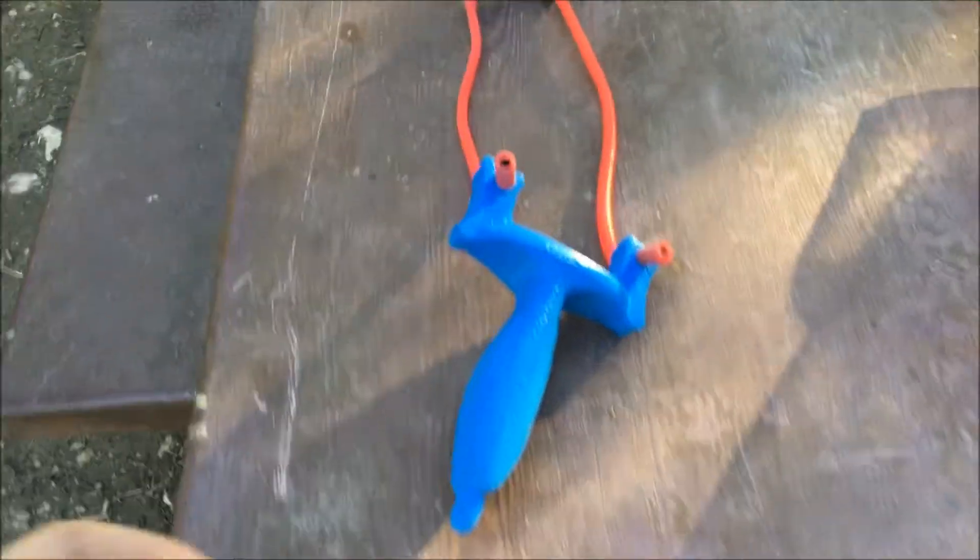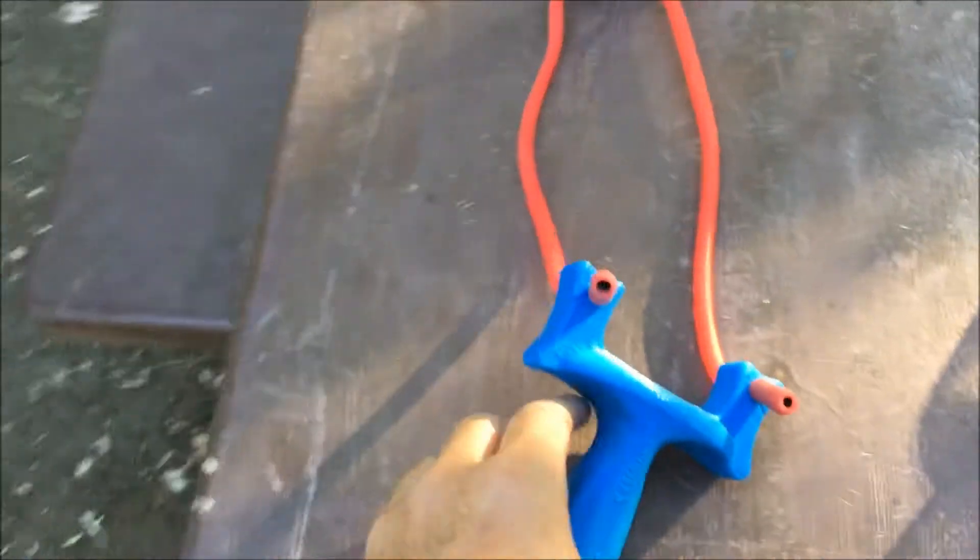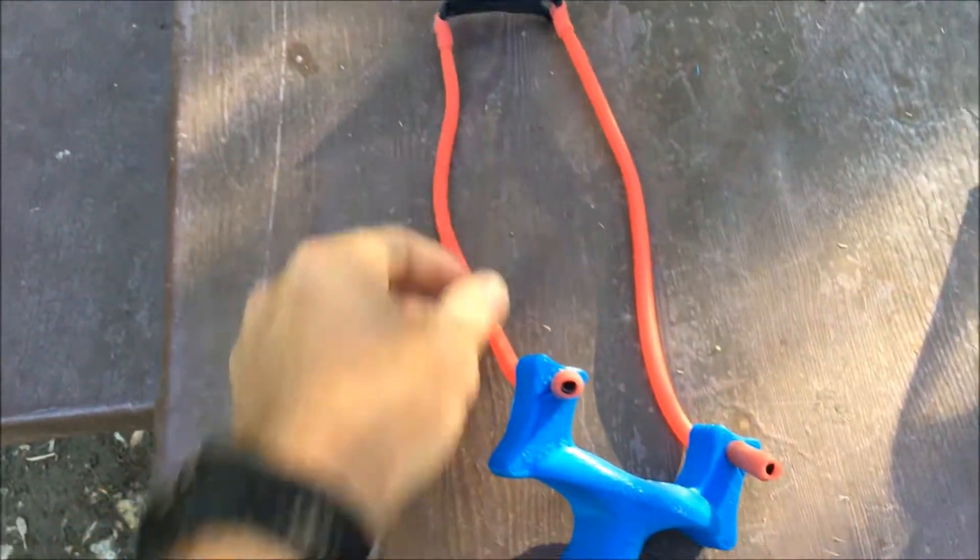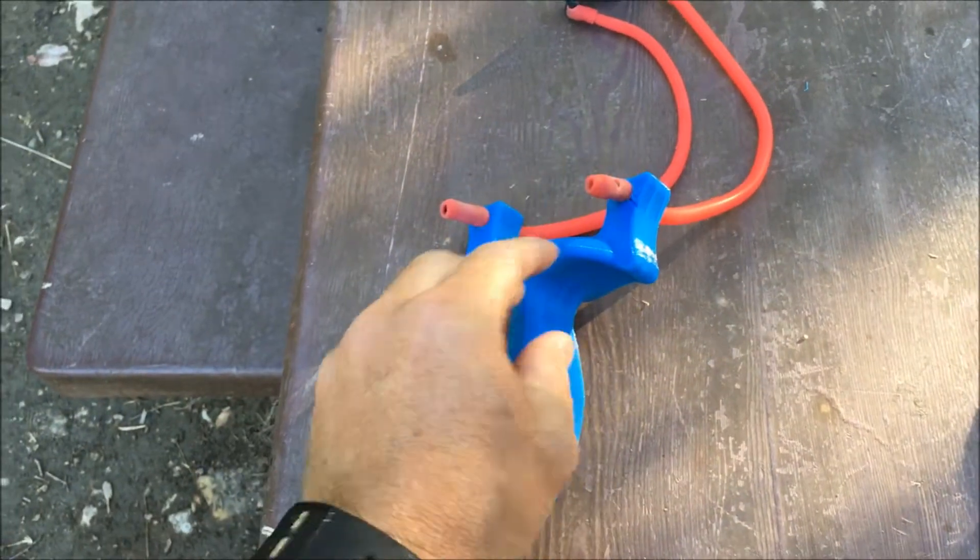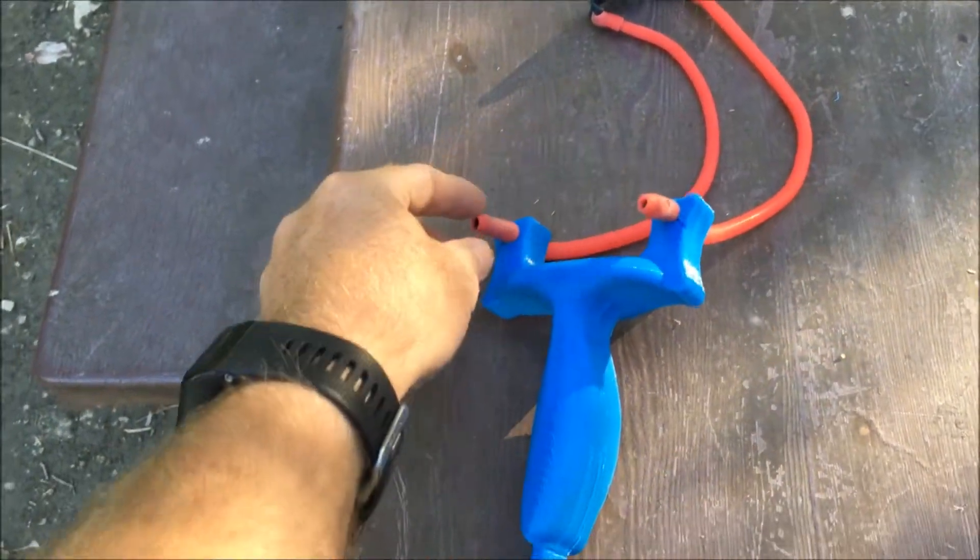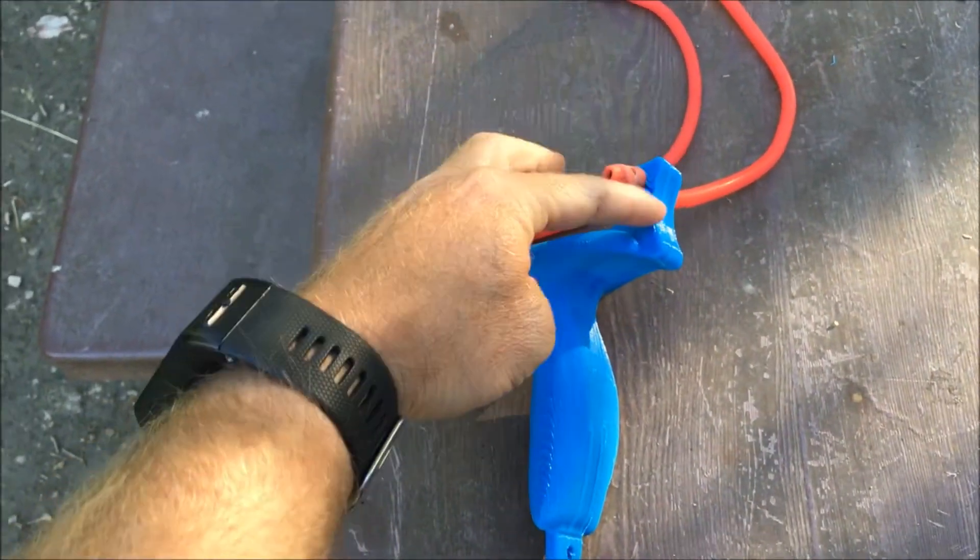So I 3D printed this slingshot and bought just a slingshot kit at Smith for like $3.50 and threaded it through. I actually had to drill these out an additional to a quarter inch.